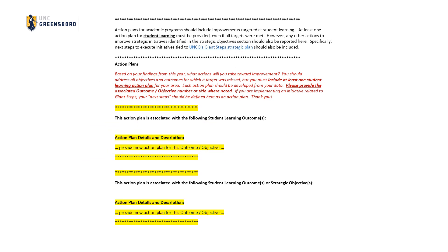In this last section of the template, the user shares what action plans they intend to execute in the upcoming academic year. You must include at least one action plan for the upcoming year. It's also important to note that an action plan should be created to address all outcomes and objectives for which a target was missed.